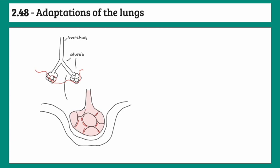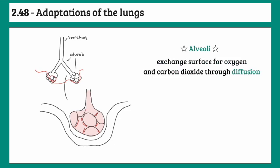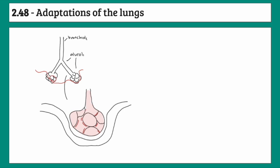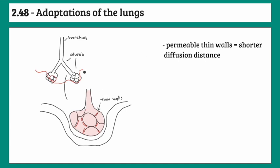The alveoli are the air sacs of the lungs where gas exchange occurs. They are highly specialized, and you need to remember all of the adaptations. Their role is to exchange gases by diffusion between air in the lungs and blood in the capillaries. First, alveoli have thin walls that are only one cell thick — this allows for a shorter diffusion distance for the gases. These walls are also permeable to allow gases to pass through.